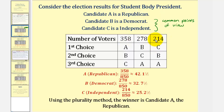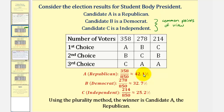Notice in this case, if we use the plurality method to determine the winner, the winner would be the republican with a total of 358 first place votes, or approximately 42.1% of the first place votes. Notice how this win would not be a majority, but using the plurality method, the winner is candidate A, the republican.